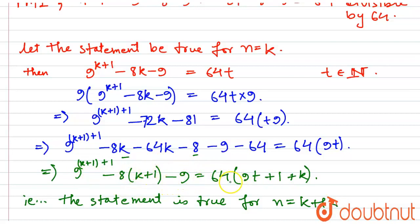And the RHS is divisible by 64. Here, 9t + 1 + k is a natural number and this RHS is divisible by 64.